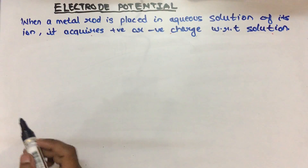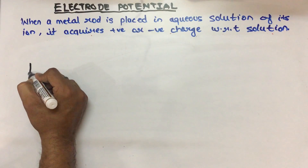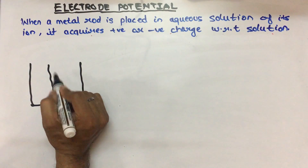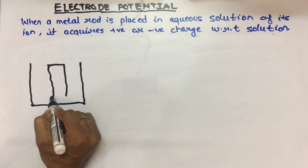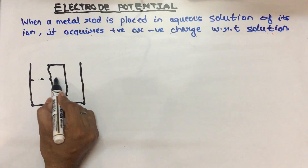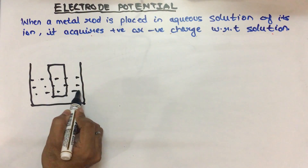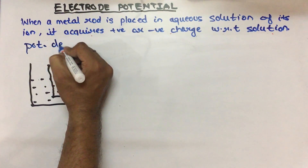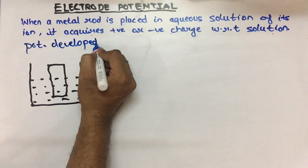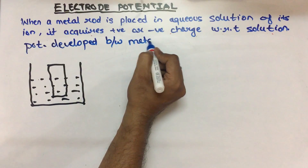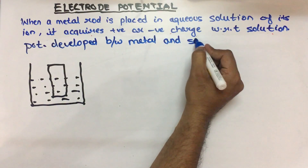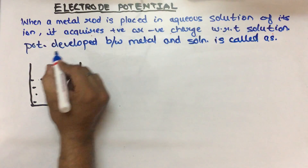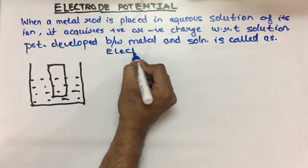Hello students. When we take a metal rod dipped in a solution of its own ions, this metal rod becomes negatively or positively charged with respect to the solution, and the potential developed between the metal and the solution is called electrode potential.